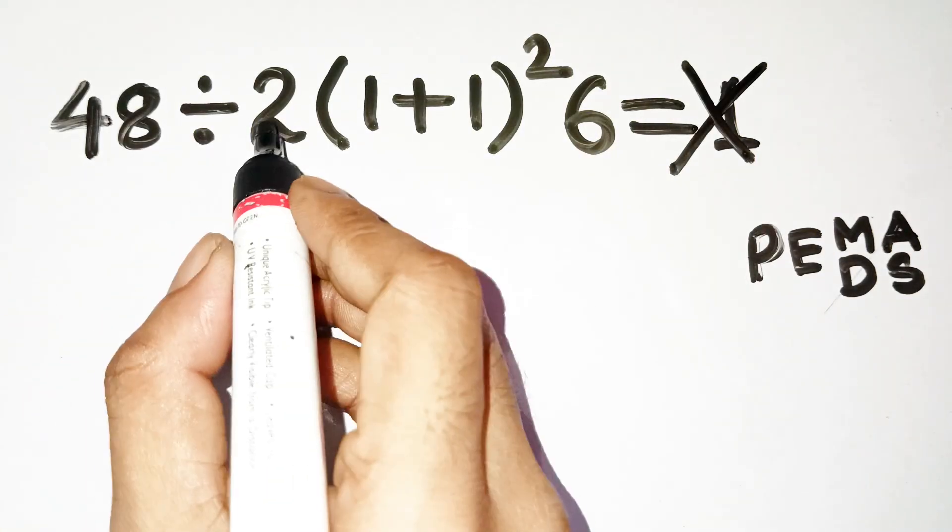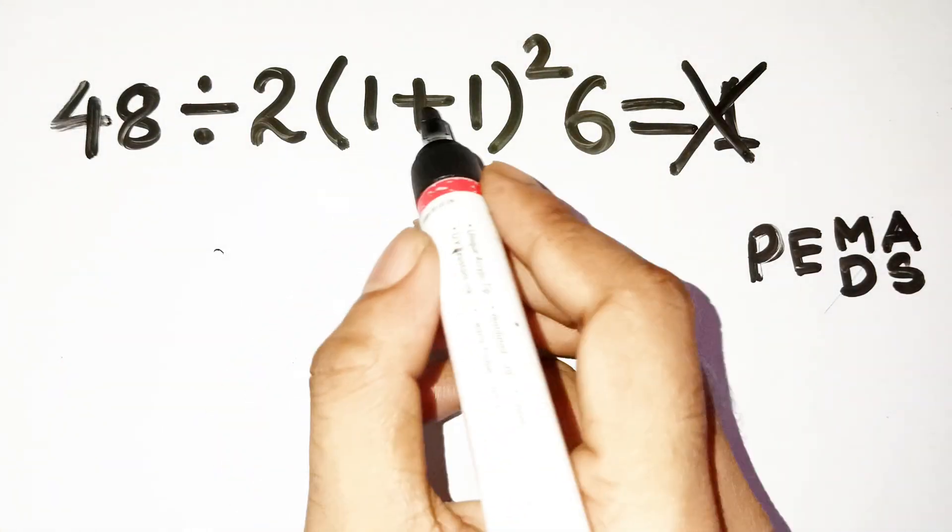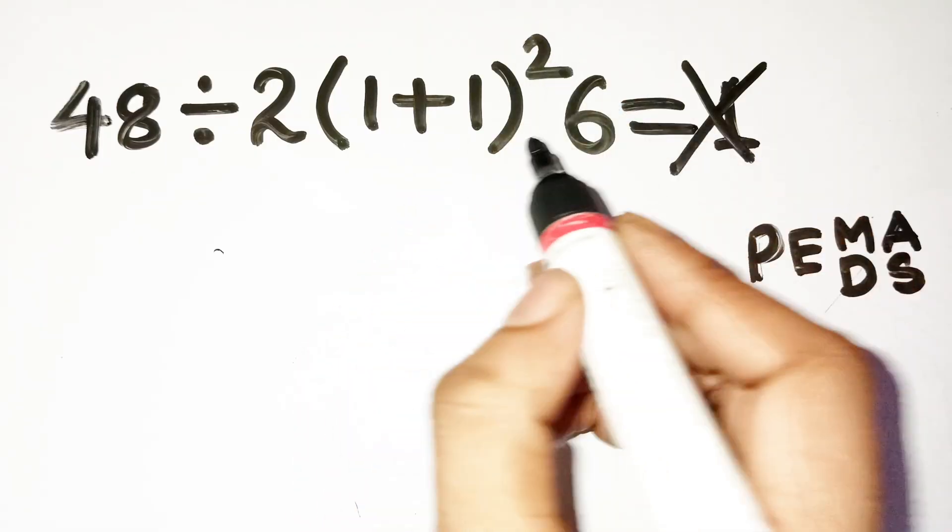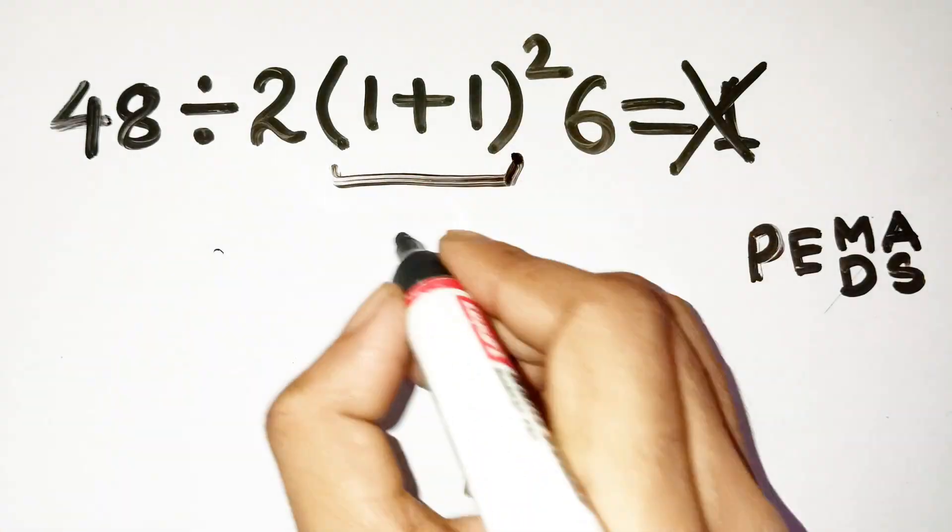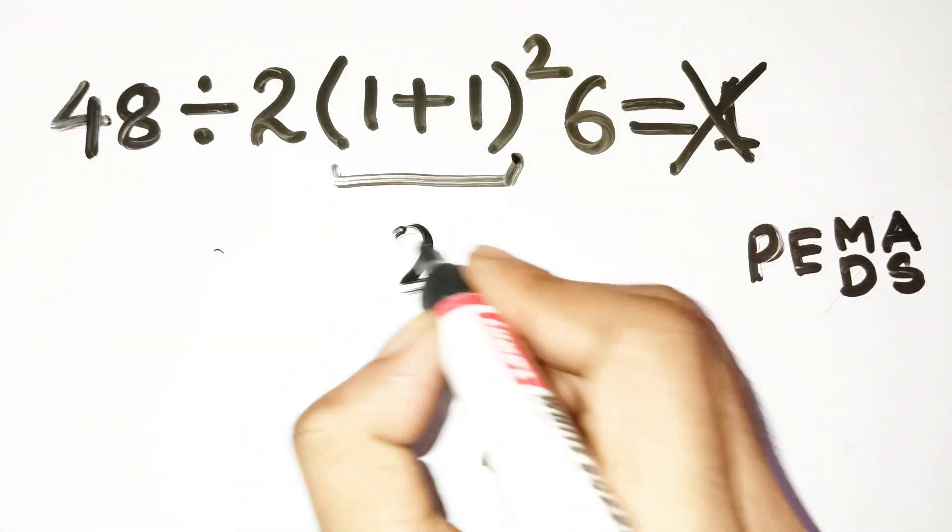You've got 48 divided by 2, then that bracket with 1 plus 1 and a square, and finally multiplied by 6. So your brain probably goes, inside the parentheses first, 1 plus 1 gives 2. Easy.